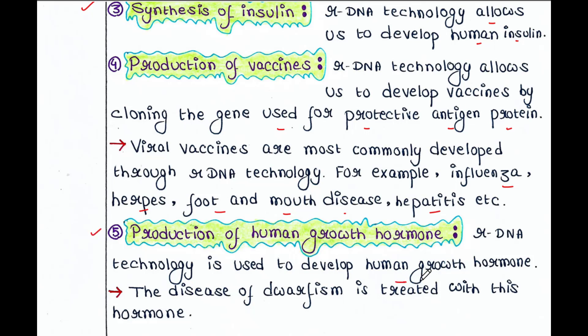Next is production of human growth hormone. rDNA technology is used to develop human growth hormone. The disease of dwarfism is treated with this hormone — a person who has dwarfism will not produce human growth hormone. In order to treat that disease, you need to treat that person with human growth hormone, which you can produce by cloning that gene in a vector.